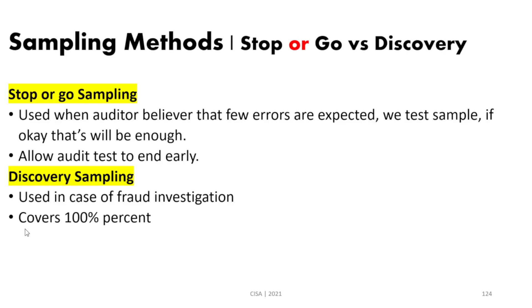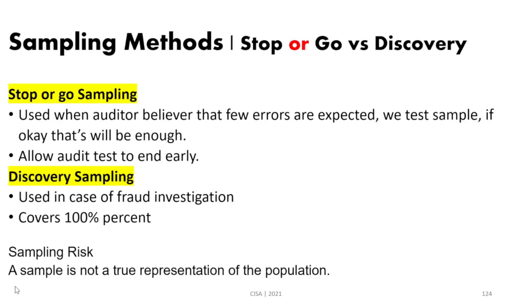Sampling risk means the selected sample does not truly represent the population. This is a big problem because conclusions made from that sample will not reflect what is actually happening, making the findings unreliable.